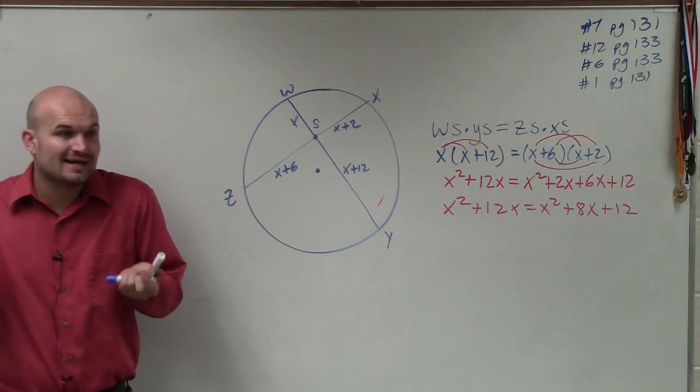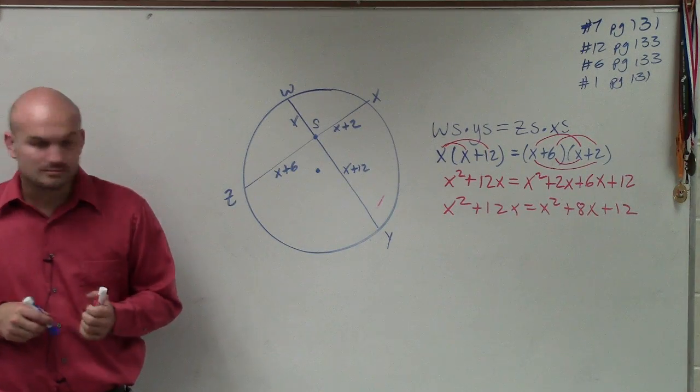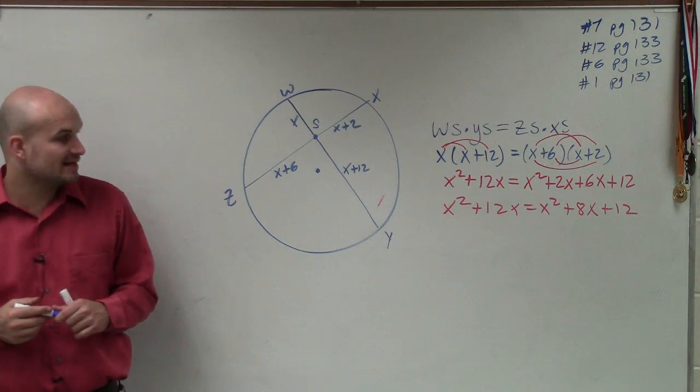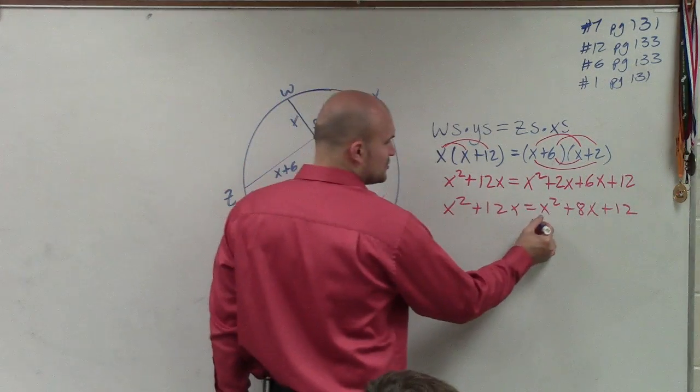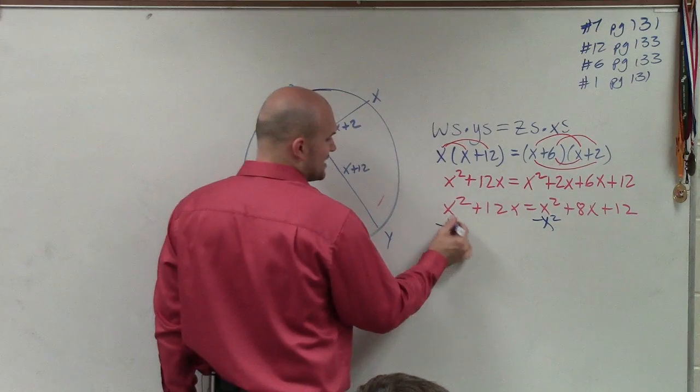So now, I got to get the x's on the same side. So it doesn't really matter which side you want to get them on, but we got to get them on the same side. So I'm going to get all my x's to the left side. So the first thing I'll do is I'll subtract x squared on both sides.